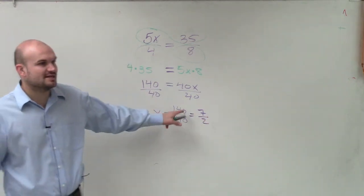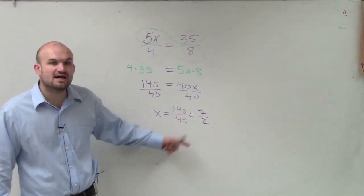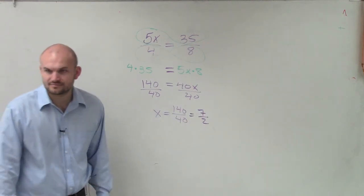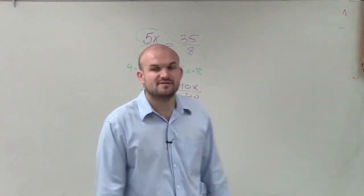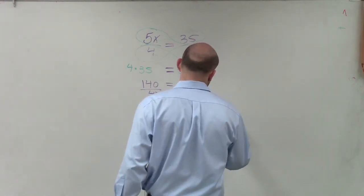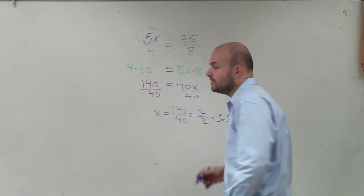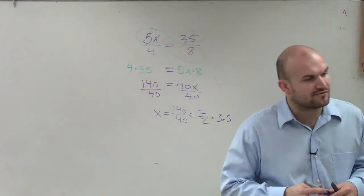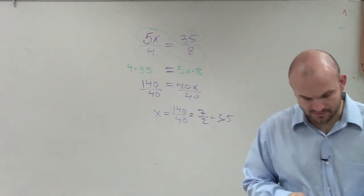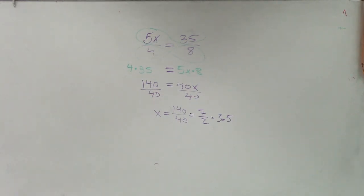So pretty much what I did, guys, is I just reduced the fraction 140 over 40 into 7 halves. And we'll just leave our answer like that. You can obviously also rewrite this as 3.5, but I want you guys to leave it as a fraction. So there you go.